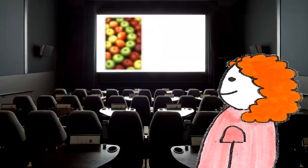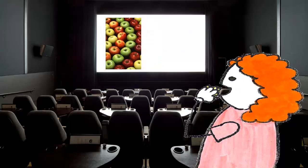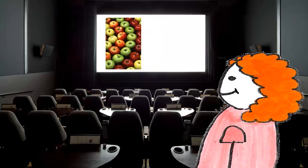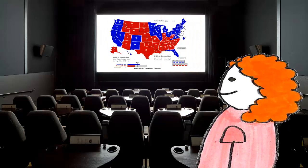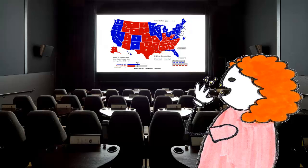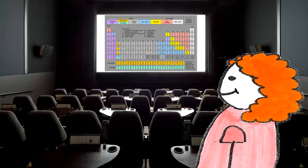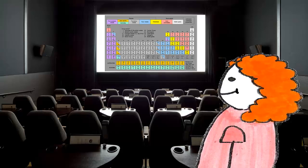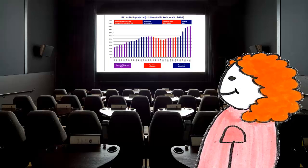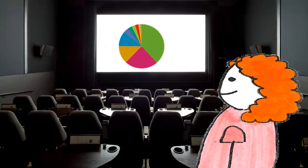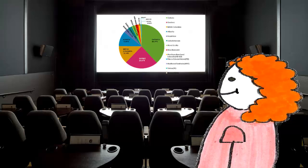For example, where most normally sighted people would see this, a person with red-green colorblindness would see this. What we're getting at here is that you should avoid using color as the sole method for conveying information. A graph like this one is okay, as long as the sections are also labeled.